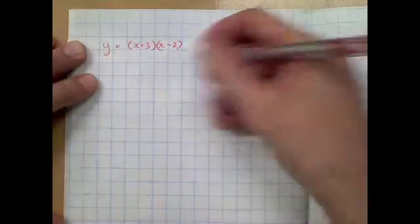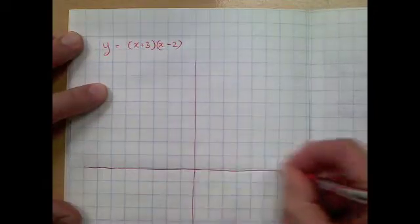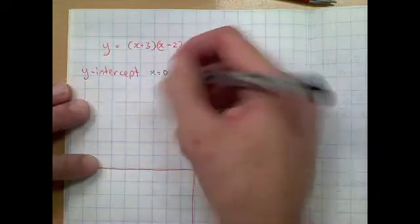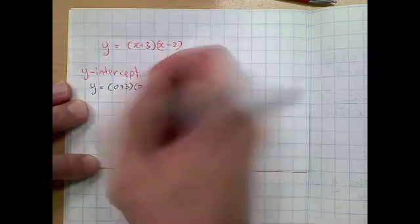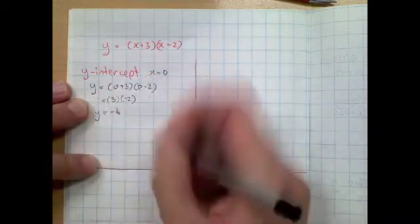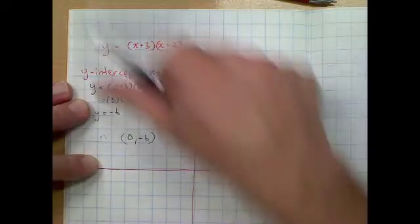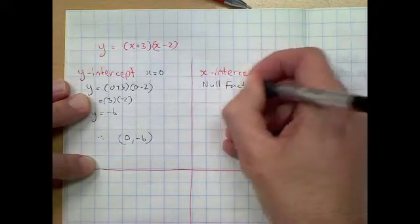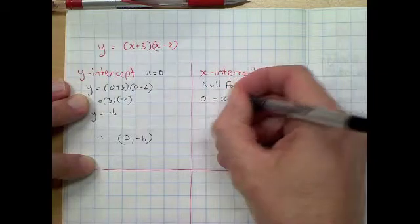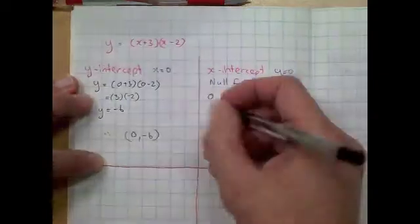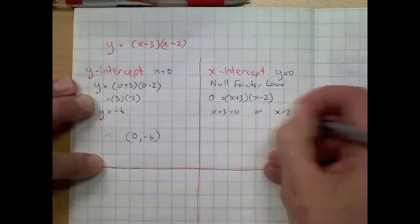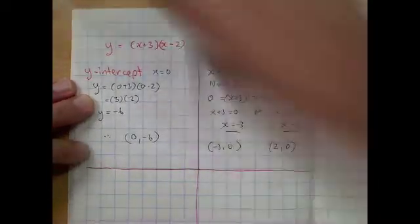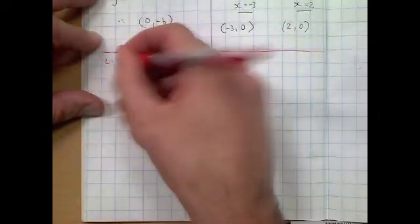Here's example one: y equals x plus 3 times x take 2. Finding the y-intercept, substitute x equals 0: 0 plus 3 times 0 take 2 gives us 3 times negative 2, which is negative 6. Coordinate: (0, negative 6). For x-intercepts, substitute y equals 0 and use the null factor law: x plus 3 equals 0 or x take 2 equals 0, giving x equals negative 3 and x equals 2. Coordinates: (negative 3, 0) and (2, 0).